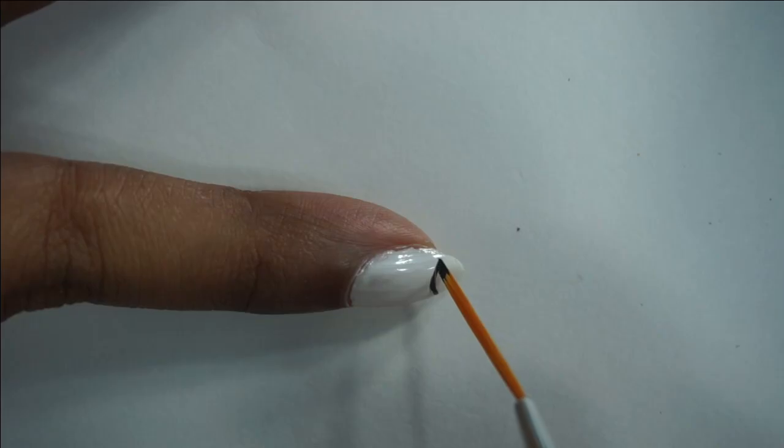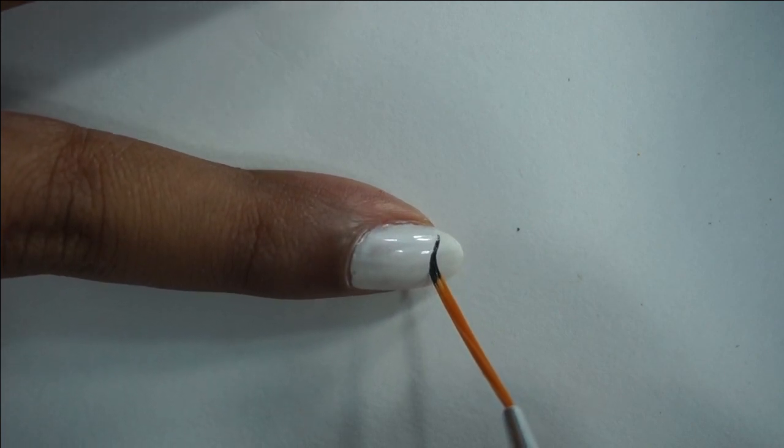Apply white polish and let it dry completely. Using the thin striping brush, I'm drawing a curve for the mouth.